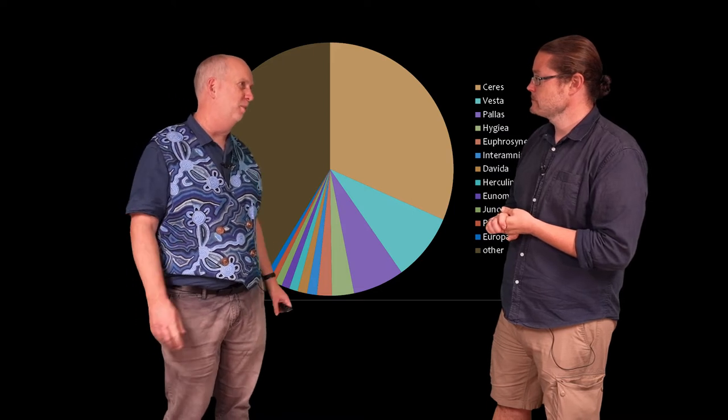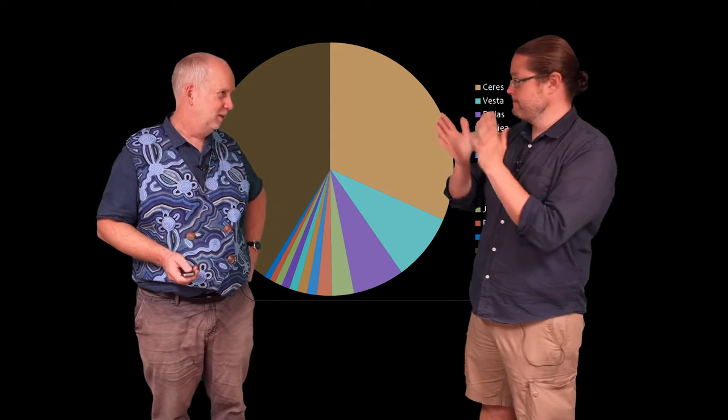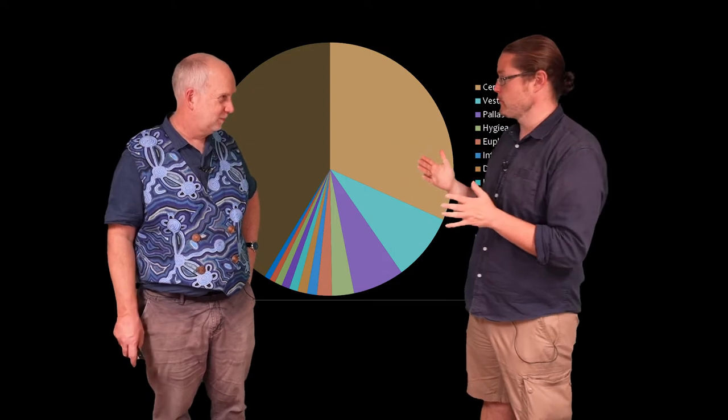And it all adds up if you add all of them together to maybe about 3% of the mass of the moon. So these things are really small, very not massive, very tiny, and in a very clear part of the solar system.